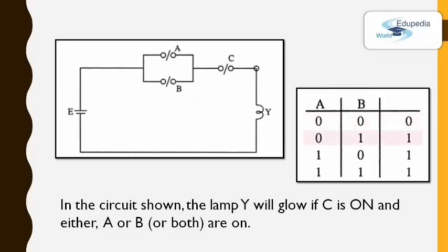In the second row, switch A is not turned on but switch B is turned on, therefore the current would be able to pass through switch B. In the last row, both switches are turned on, therefore the current would be able to pass through both of those switches. Now this truth table is familiar to us — the OR gate has the same truth table. Therefore switches A and B represent the OR gate.